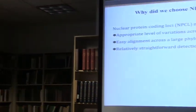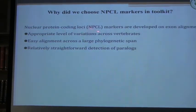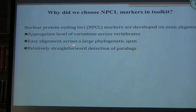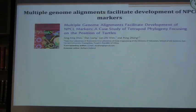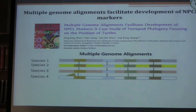Why do we choose nuclear protein-coding genes for our marker choices? Because nuclear protein-coding genes provide an appropriate level of variation across vertebrates, they are very easy to align with very few indels, and relatively straightforward detection of paralogous sequences. If you amplify some paralogous sequence, you can very easily detect that. That's why we choose nuclear coding genes rather than introns and other non-coding sequences.